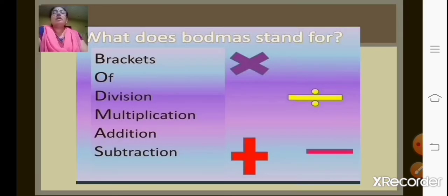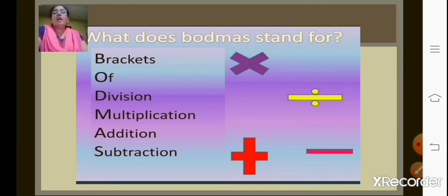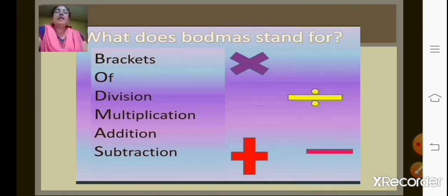Now what does BODMAS stand for? We have learned about addition, subtraction, multiplication and division. BODMAS stands for: B — Brackets, O — Of, D — Division, M — Multiplication, A — Addition, and S — Subtraction. Now the 'Of' part we will be learning in the higher classes. Just brackets, division, multiplication, addition and subtraction we will be learning today.